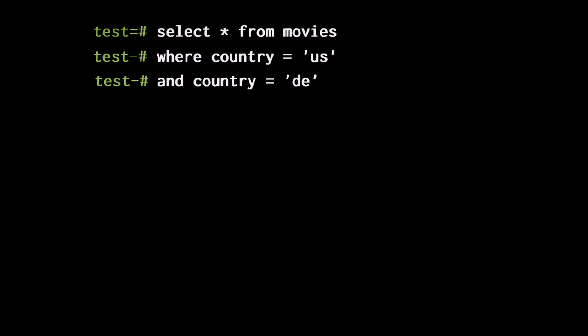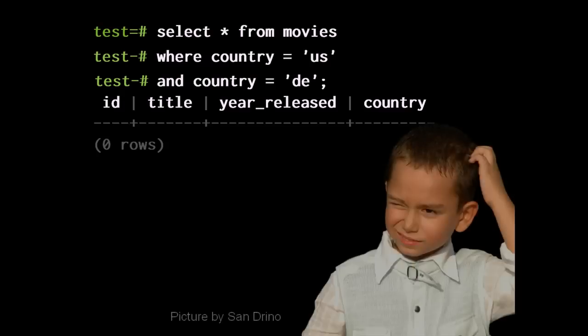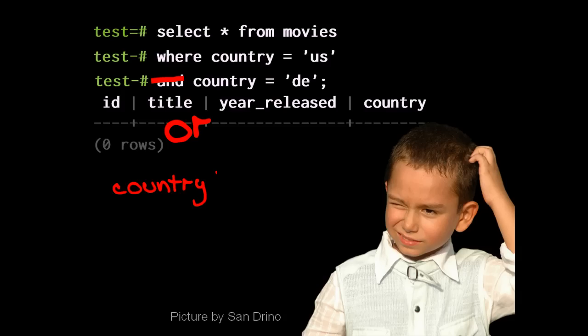The typical beginner's mistake is to say: I want to see all of the movies from the US and all of the movies from Germany. Result? Nothing. The mistake is the AND, because the condition actually means the condition country = 'US' is true AND the condition country = 'DE' is true, which no rows can match. We should use OR instead, or the equivalent and perhaps more legible IN condition.